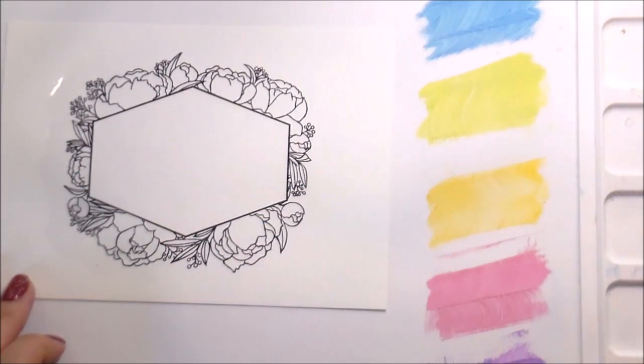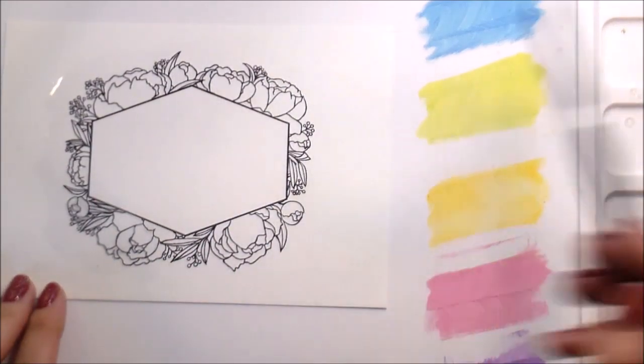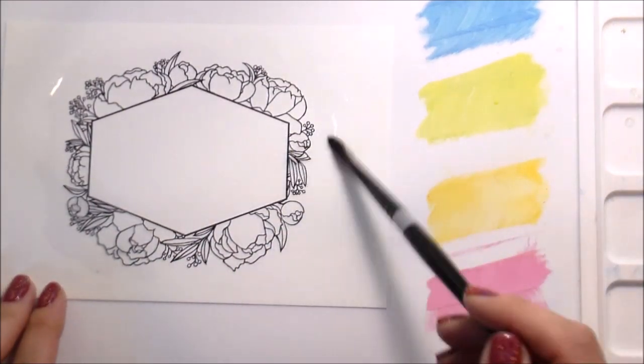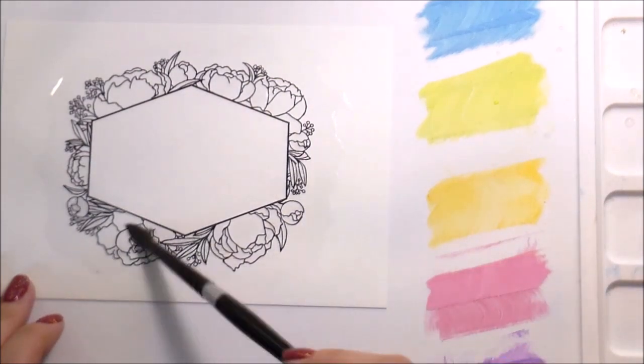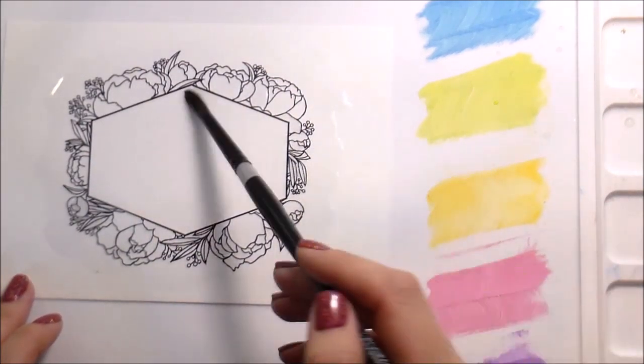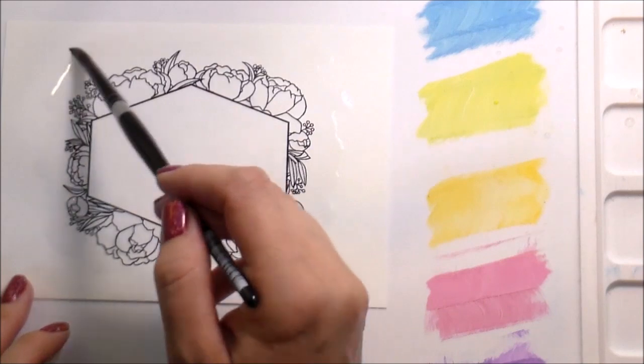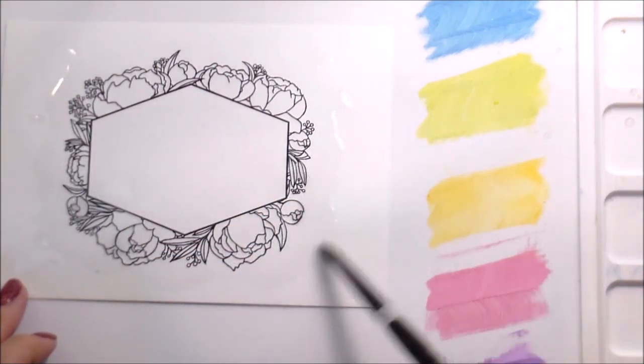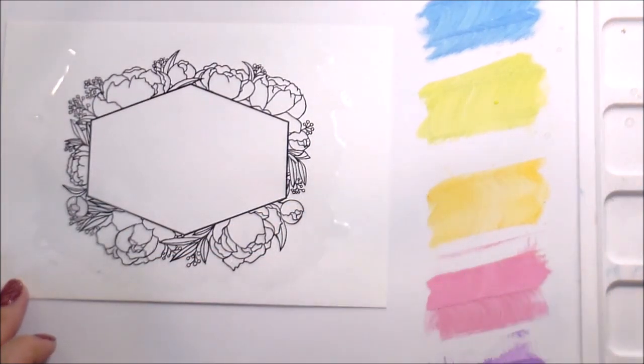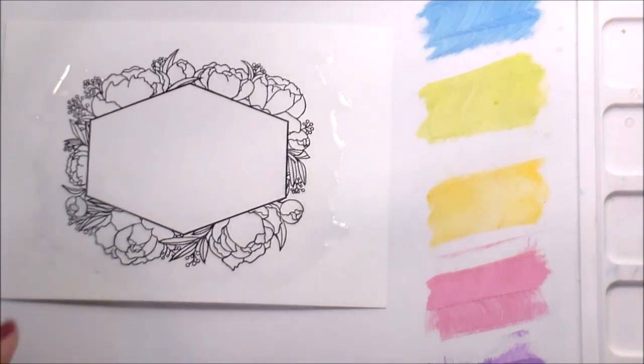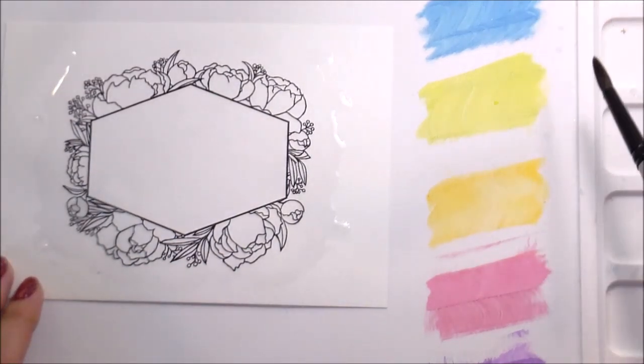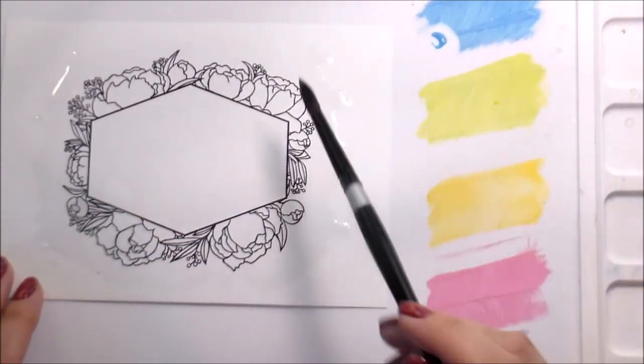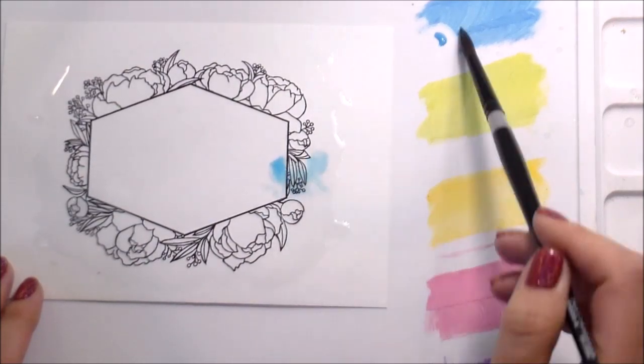So here I'm just putting down clean water. I'm using a number eight round brush from the Silver Brush Company and your color is going to go anywhere that it's wet. So don't put water anywhere you don't want pigment. I'm just giving myself a good halo around this image of lots of water since I do want it to be a little bit more pale. And then I'm just going to start dropping in the color.